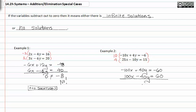Notice that when I do this, I add my terms together, and I get zero zero equals zero, or zero equals zero. This is true, but it's also an identity, which means there are infinite solutions.